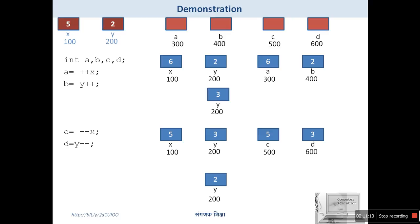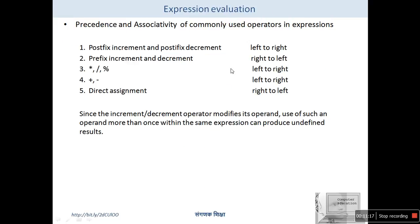To evaluate any expression combining increment, decrement, arithmetic, and other operators, we use operator precedence and associativity. The highest priority in the precedence table is post-fix increment and post-fix decrement, with left-to-right associativity. Second priority is prefix increment and prefix decrement, with right-to-left associativity. Then come arithmetic operators: multiplication, division, modulus (left-to-right), then plus and minus (left-to-right), and finally direct assignment (right-to-left).